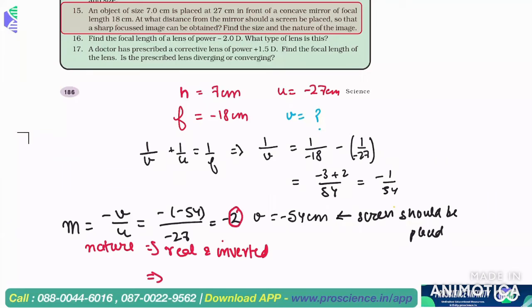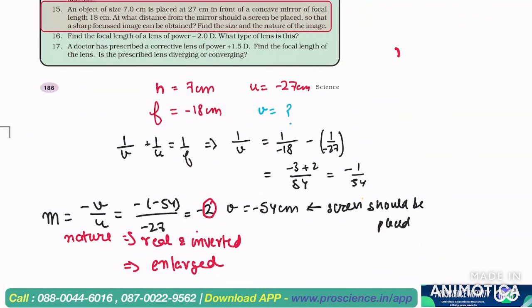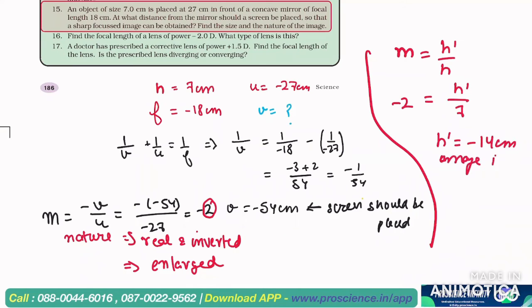Now the value is greater than one, it is enlarged image. Size of image, so we can find m is equal to h dash by h. h dash, it is minus 2 is equal to h dash by h. Image will be 7, h dash will be minus 14 cm. The image will be twice the size of the object.